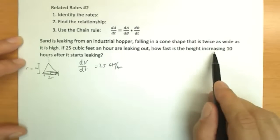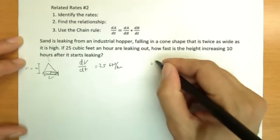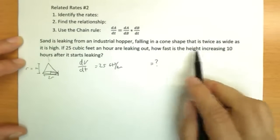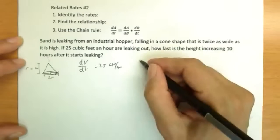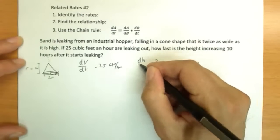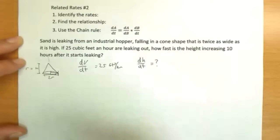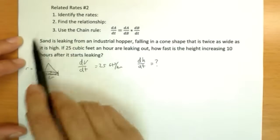25 cubic feet an hour is the change of volume with respect to time. How fast is the height increasing? So this is the rate we don't know. It's asked us, so it's a question mark. Height increasing with respect to time, so dh/dt. So we've identified the rate that's given and the rate that we don't know. Step one is complete.